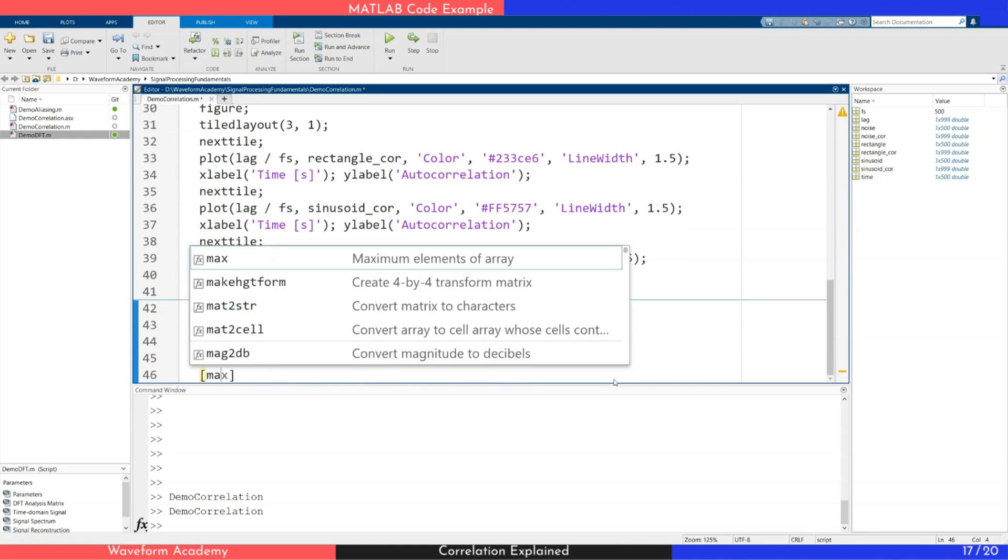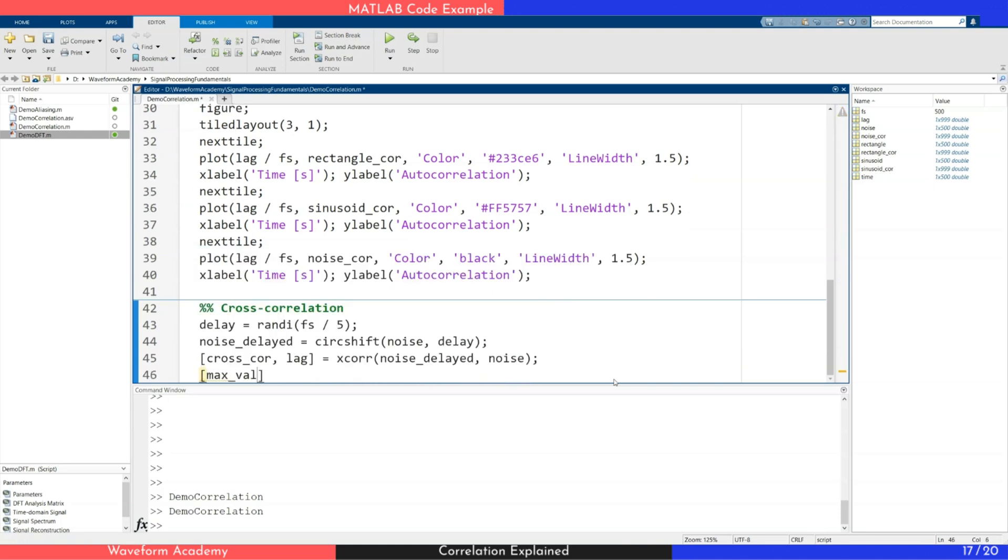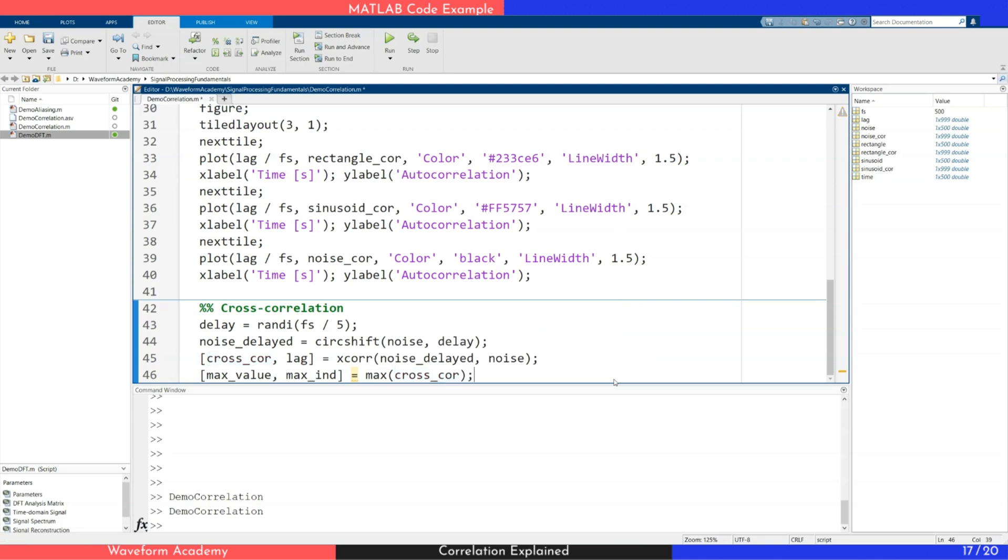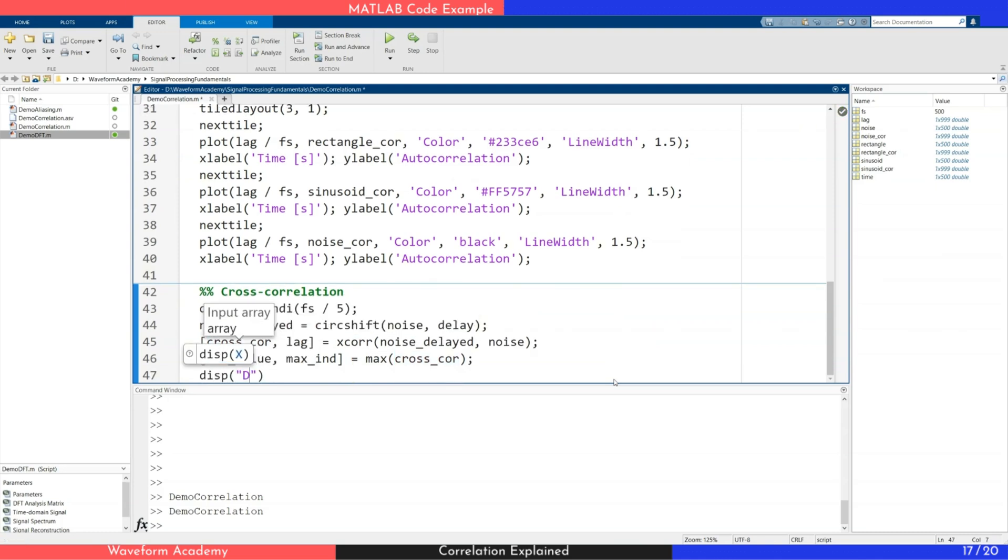Next, we find the maximum value of the cross-correlation and its corresponding index. This peak indicates the point of highest similarity. We display the detected delay in the console and visualize the result in a plot.